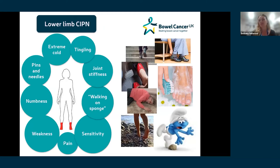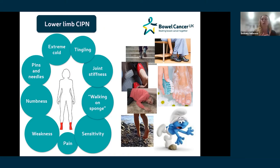Similarly, lower limb symptoms present with the same sensations, but the main additional impact is on balance and ability to walk. You can have sensations of walking on unusual surfaces — like walking on a sponge or having something under your feet. There's huge importance around foot health: you may not notice if you've caught or stubbed a toe, creating a risk of infections or wounds. Regularly checking your feet if sensation is impaired is really important. Affected balance also creates a higher falls risk.